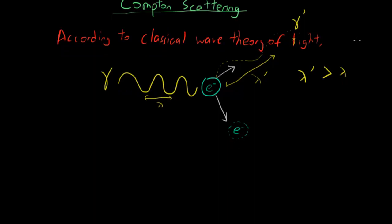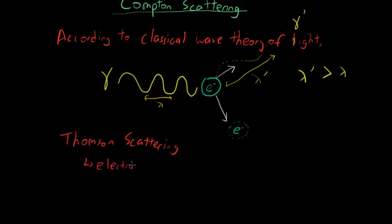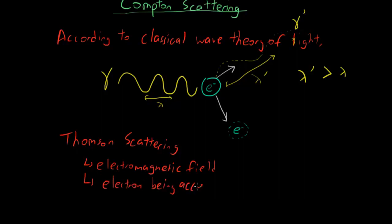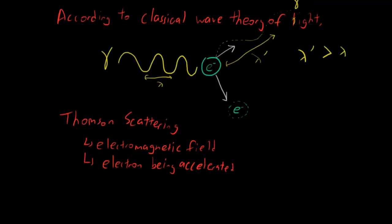Scientists wanted to explain why, and they tried using the classical wave theory of light. This was explained through Thomson scattering. What this said was that light gave off some sort of electromagnetic field, and the electron in that field would get accelerated because of the electric component — so the electron would get accelerated, which explains why the electron moved. But how about the increase in wavelength?